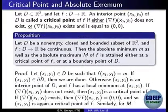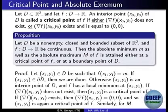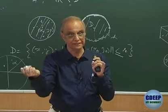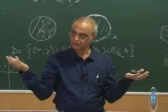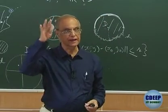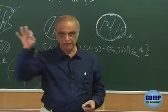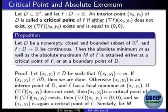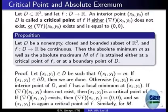A critical point for a function of two variables is an interior point where either the gradient does not exist — meaning one of the partial derivatives doesn't exist — or the gradient exists and equals 0. This is exactly analogous to the one-variable case. Instead of the derivative f'(x₀), we have the gradient (f_x(x₀, y₀), f_y(x₀, y₀)). The proof of this proposition is word for word the same as in the one-variable case.